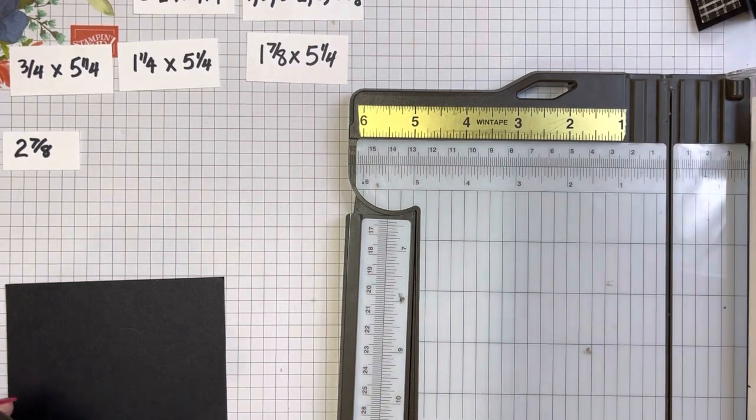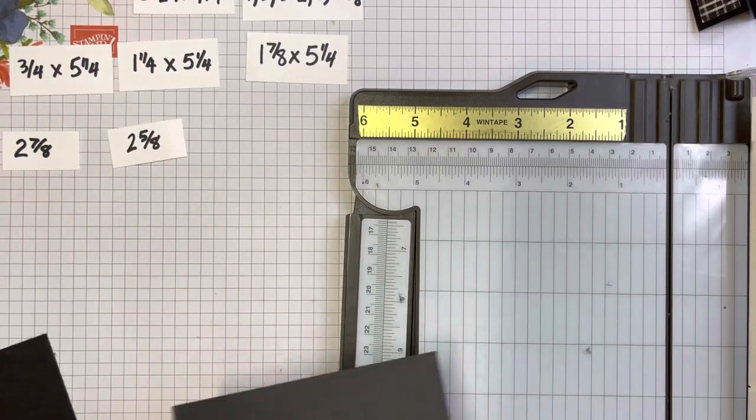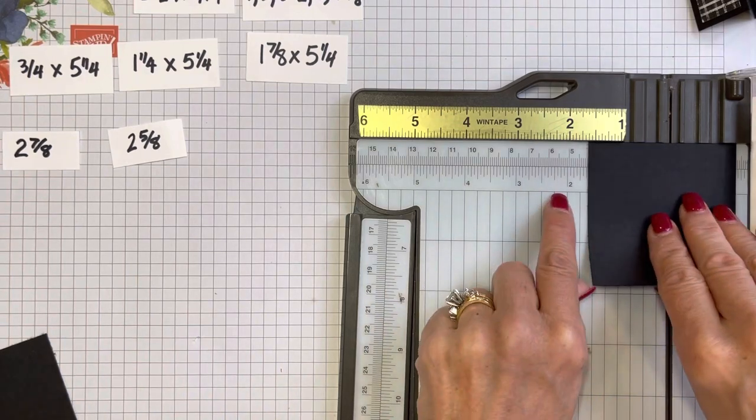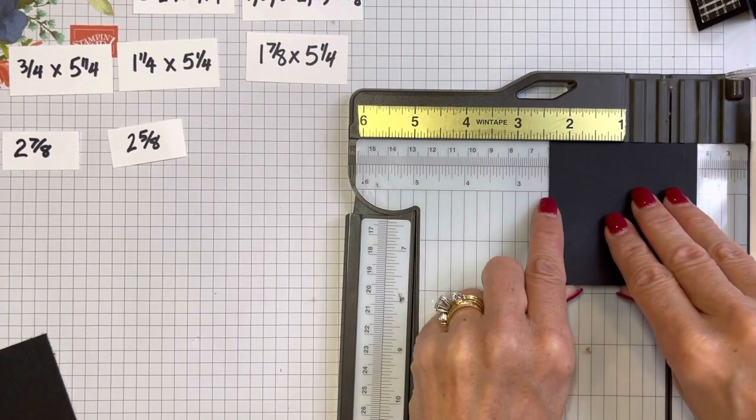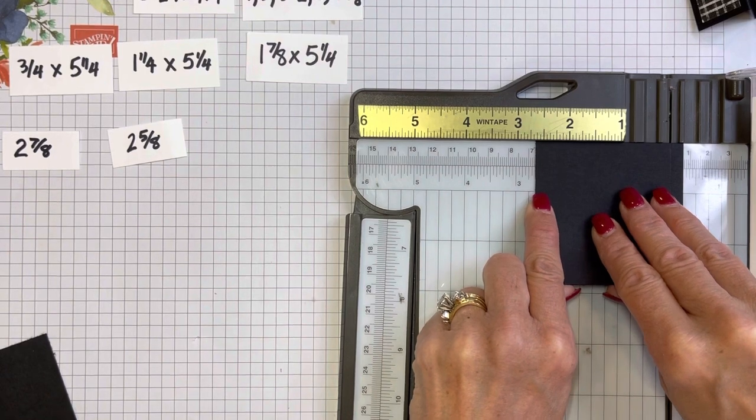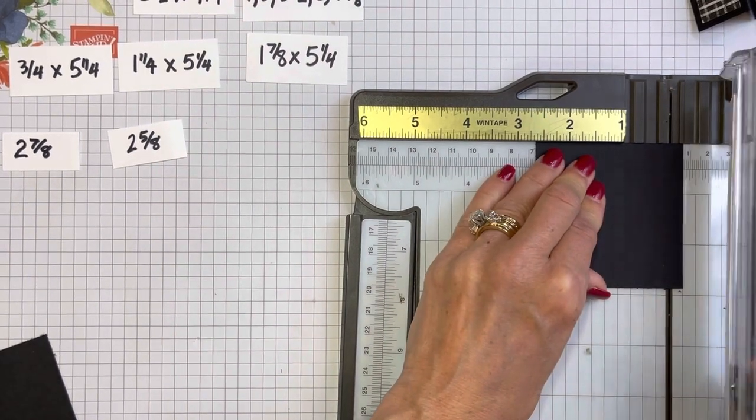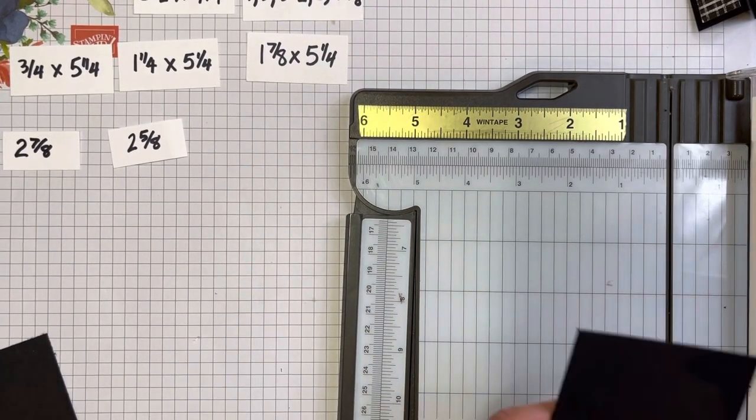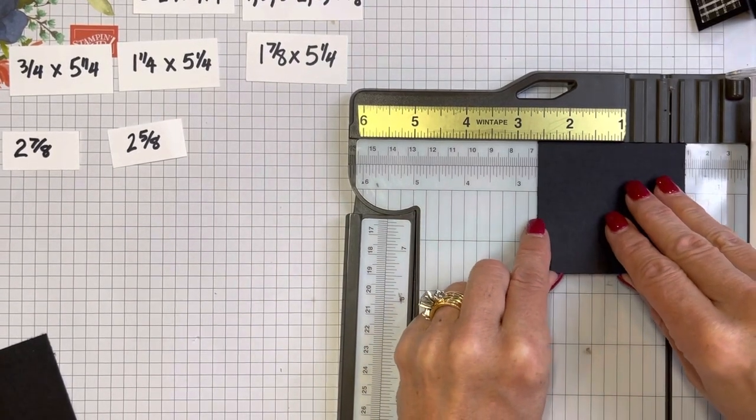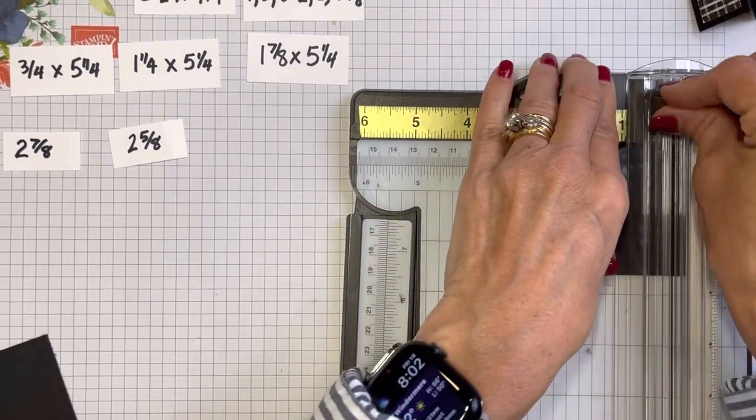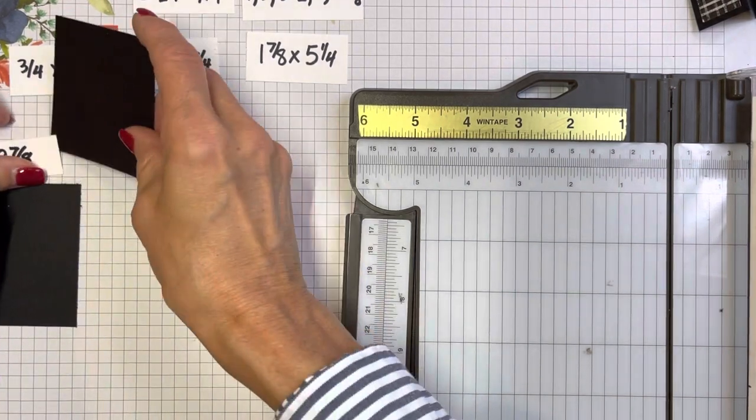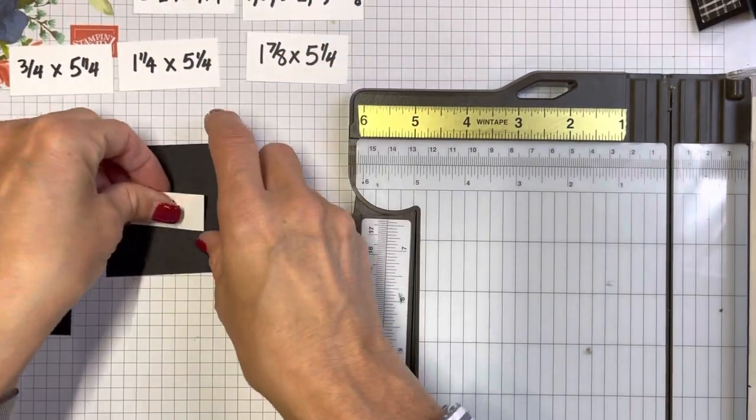This biggest black, I'm going to go from the biggest black down to the smallest black square. The first black square is going to be 2⅞. You're just going to go right before two little marks before the three. Then do that again, 2⅞.